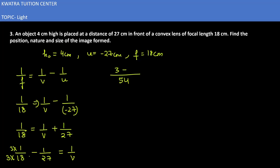Second you will get is 2. You get 27. When you multiply by 2, you will get 54. So 3 minus 2 is 1. 1 over 54 equals v. So v's value is 54cm.